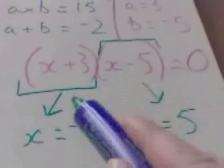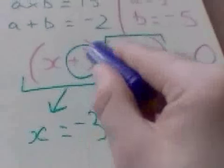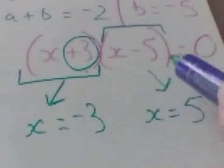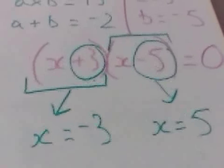If you look, the x values, the first one is the opposite of that number. And the second one is the opposite of this number. That's where you can get extra marks in your exam.